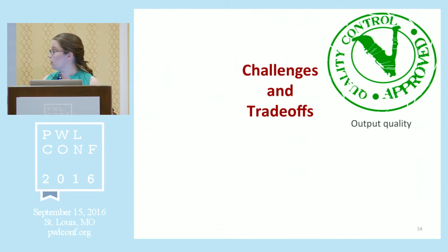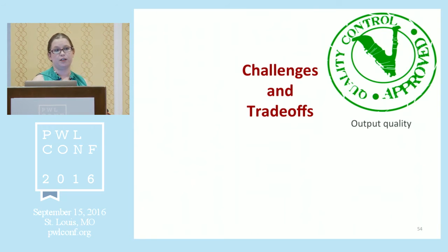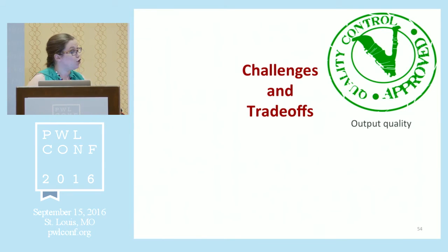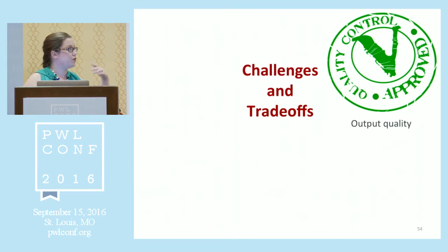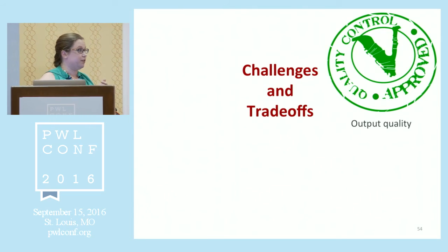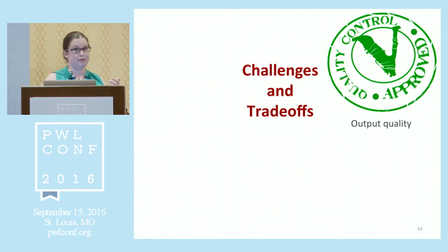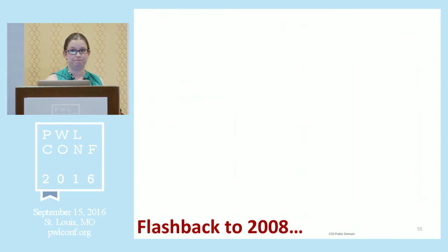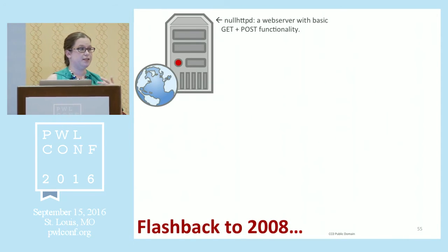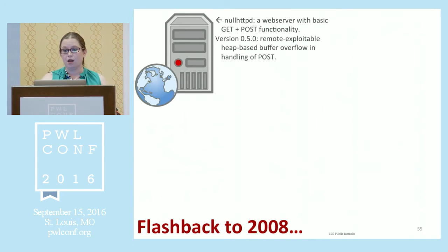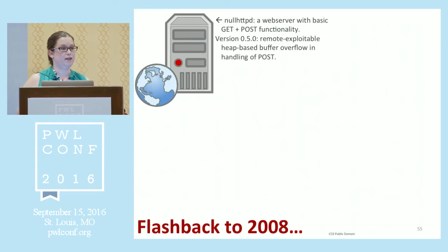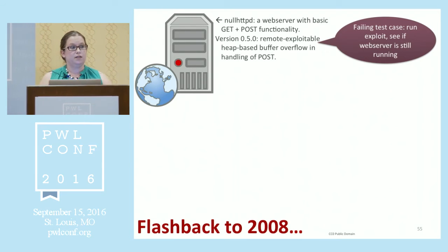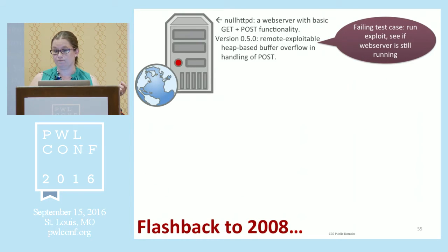Our concern with patch quality goes back to the start of our work in program repair. Something I think is more informative goes back to the second bug we ever tried to fix with GenProg. The second bug was in a 6,000-line very bare-bones web server called nullHCPD. Version 0.5.0 had a remotely exploitable heap-based buffer overflow in the handling of POST — somebody forgot to check that a user-provided input was greater than zero before calling malloc with it. You can write a failing test case easily: spin up your server, run the exploit, check if the server is still running. So we need passing test cases — a web server gets some stuff. So we wrote GET index.html, GET 404.html — and then audience participation: what happened?